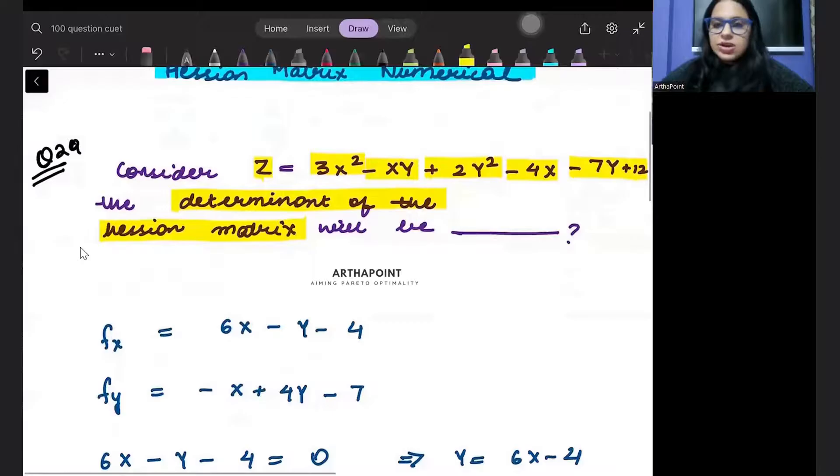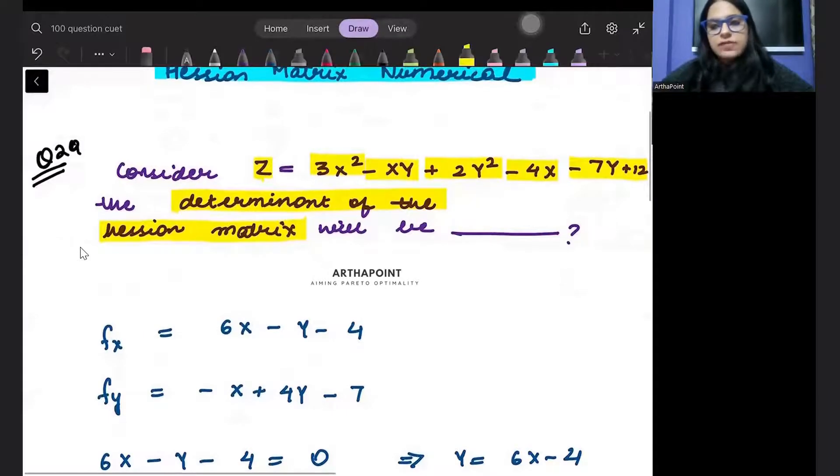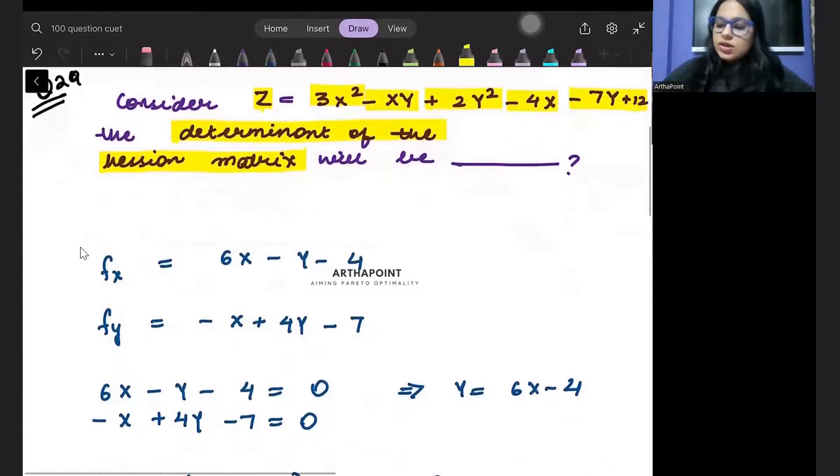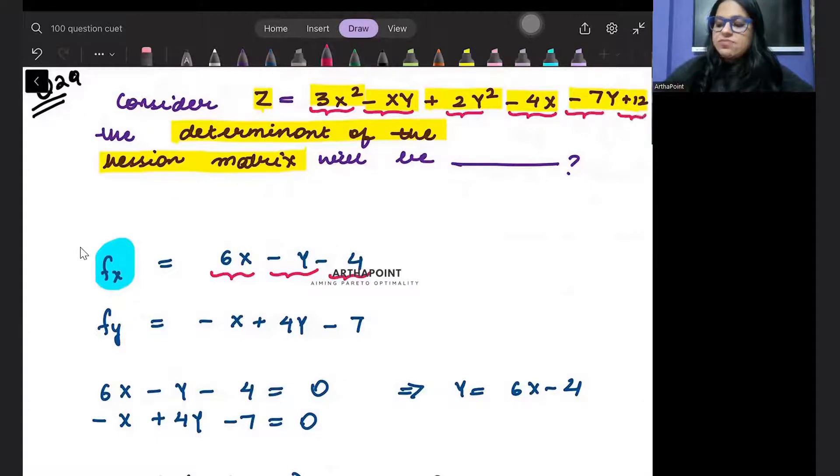Give it some time. Try to do it yourself first. Then I will do this. Okay, let's start now. You are given this function. We will find the marginal value. So differentiate this with respect to x. 3x squared becomes 6x, minus xy becomes minus y. There's no x here. Minus 4x becomes minus 4. Minus y has no x. 12 has no x. So you will get 6x minus y minus 4.